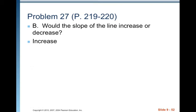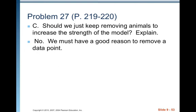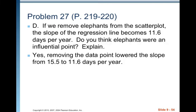Would the slope of the line increase or decrease? Well, the line would become steeper, so the slope would increase. Should we just keep removing animals to increase the strength of the model? Explain. No. We must have a good reason to remove the data point. If we remove elephants from the scatter plot, the slope of the regression line becomes 11.6 days per year. Do you think elephants were an influential point? Explain. Yes. Removing the data point lowered the slope from 15.5, which you can get from the original problem in problem number 25, to 11.6 days per year. So, that is some serious influence.